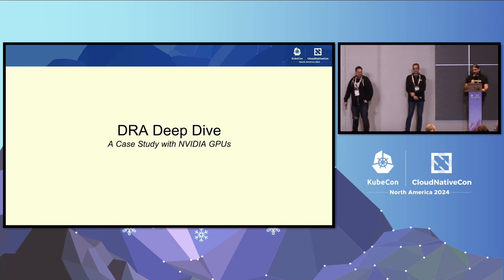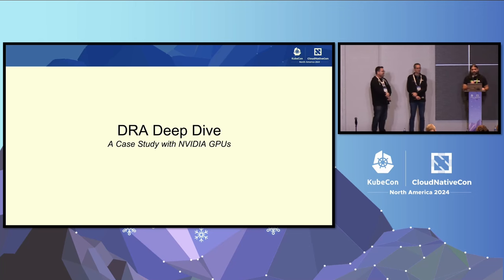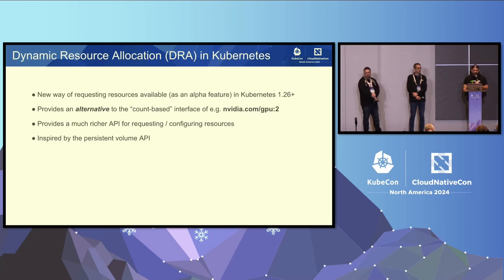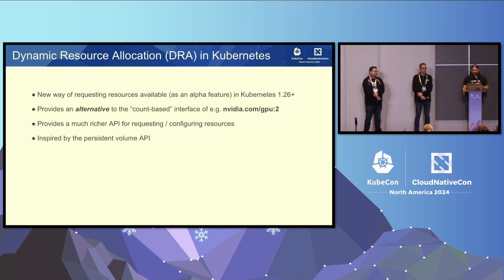Kevin is going to dive in and show a deep dive of how DRA works with NVIDIA GPUs. A lot of you may have seen me give talks on DRA in the past and the different APIs we used to select and configure GPUs. The purpose of this is to show that now we have this stable API in 1.32 — what does this API look like? It's changed quite significantly from the original classic DRA and even through some iterations of structured parameters. DRA itself is a new way of requesting resources that has been available as an alpha feature since 1.26 and has only now reached beta.